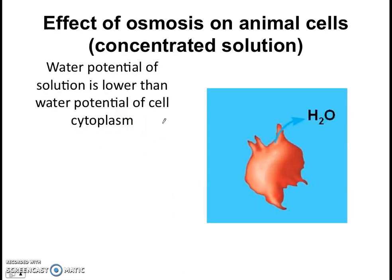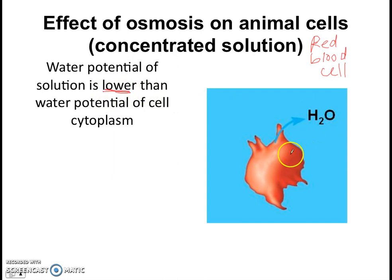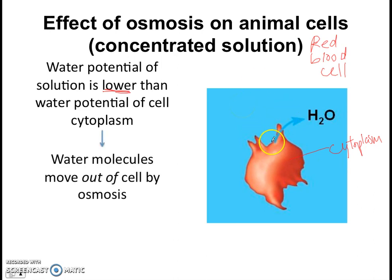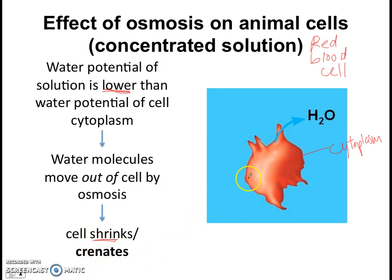Let's do a quick recap on animal cells as well. What is the effect of osmosis on animal cells? If I place an animal cell — we like to use the example of red blood cells — in a very concentrated solution, the water potential of the solution is lower than the water potential of the cytoplasm because it's very concentrated outside. So water molecules move out of the cell by osmosis, and this causes the cell to shrink. If you want to go further, it causes the cell to crenate.